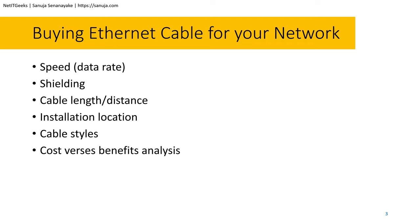Installation location — whether you put the cable inside or outside the building — defines what type of cable you purchase. Cable style is a minor detail, but it does sometimes matter. For example, Cat5e is available as a flat cable where all wires are flat, compared to the regular rounded jacket. Finally, cost versus benefit analysis is important whether you're working for a small business or a large corporation.